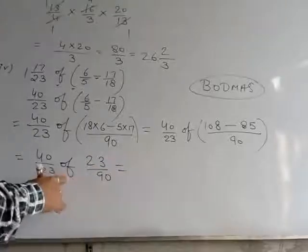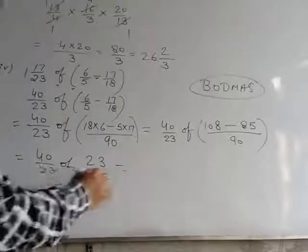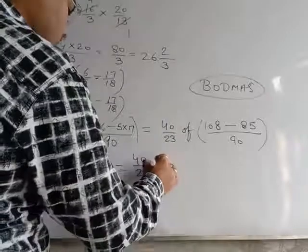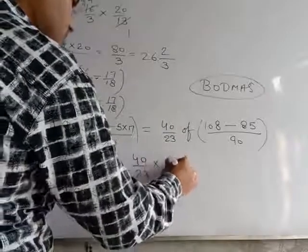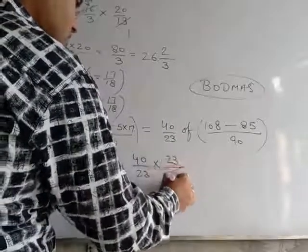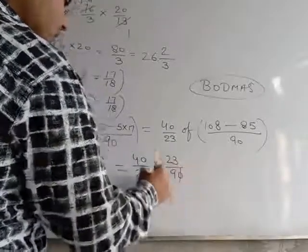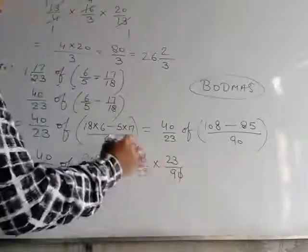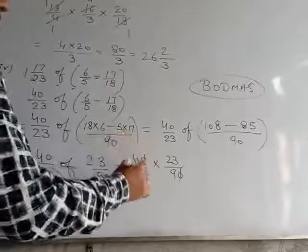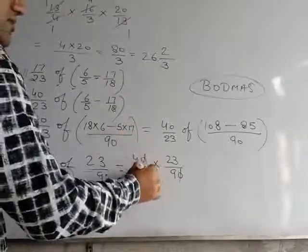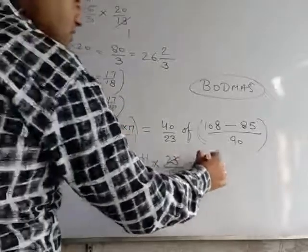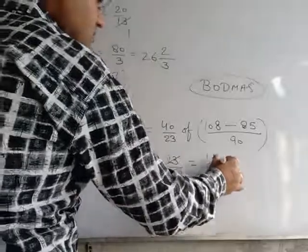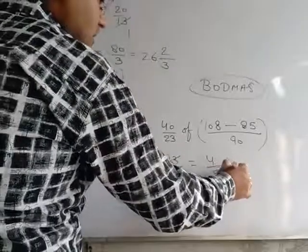Off means multiply. So we do: 40/23 multiply 23/90. The 23 in numerator and denominator cancel. The 0 in 40 and 90 also cancel — leaving 4/9. So the final answer is 4/9.